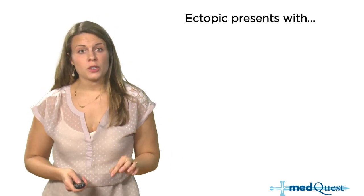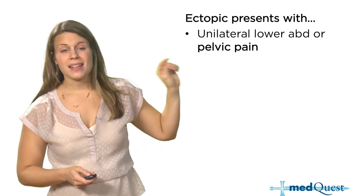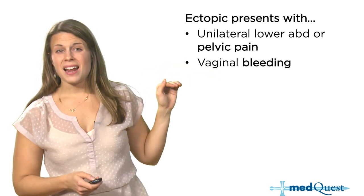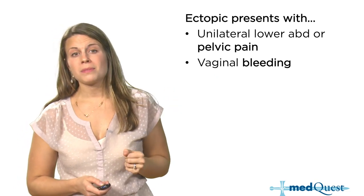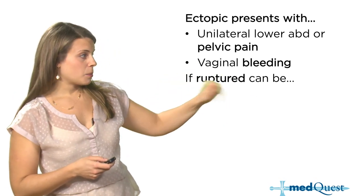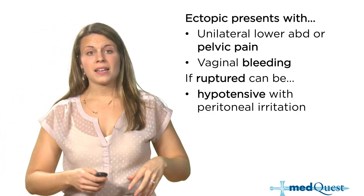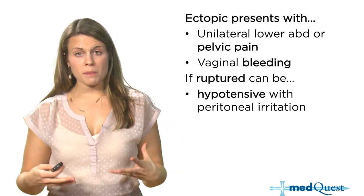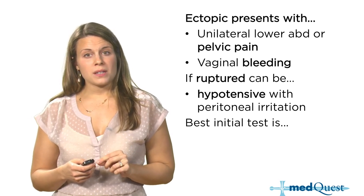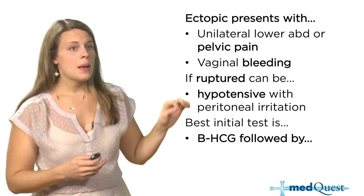How do ectopic pregnancies present? First, they'll have unilateral lower abdominal or pelvic pain — that's a must. They may present with vaginal bleeding, though not every patient will have this. Patients with a ruptured ectopic can become hypotensive with peritoneal irritation secondary to fluid and blood filling the belly, causing significant pain. For the best initial test, the answer is always a beta-HCG.